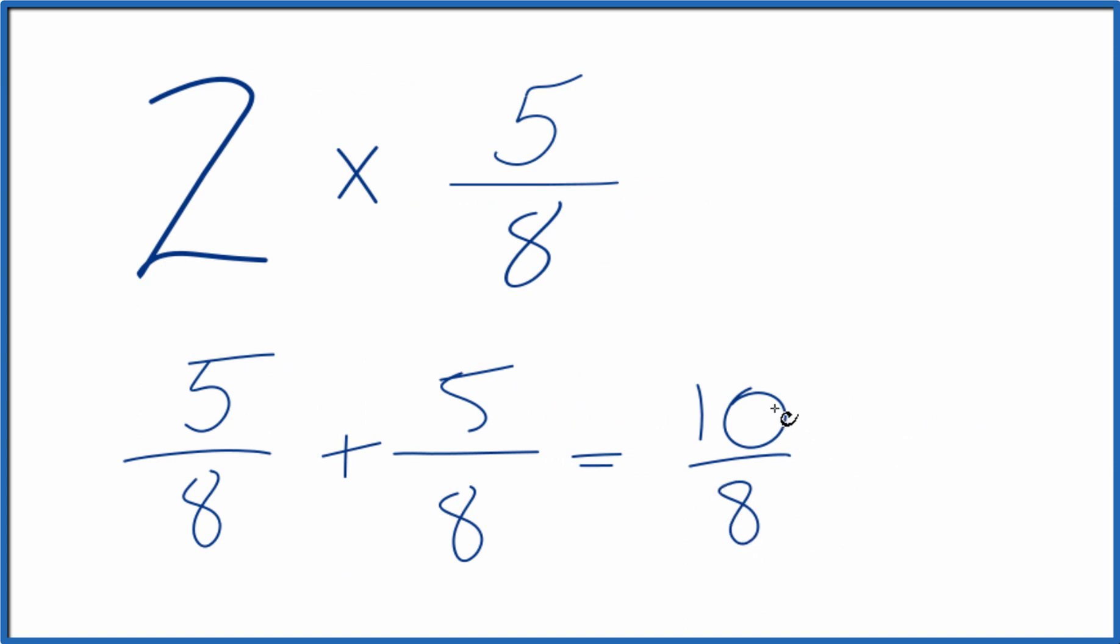But we can simplify this. These are both even numbers. So let's divide 10 and then 8 by 2. 10 divided by 2 is 5. 8 divided by 2 is 4. So 2 times 5 eighths, that equals 5 fourths.